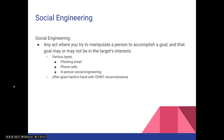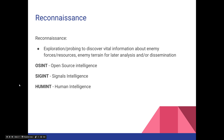Part one: Social Engineering. Social engineering is any act where you try to manipulate a person to accomplish a goal, and that goal may or may not be in a target's interest. There are various types: phishing email, phone calls, in-person social engineering, rumors, spreading gossip, seeding online dissent — it can be direct or indirect. It often goes hand-in-hand with open-source intelligence reconnaissance, which is basically human intelligence.